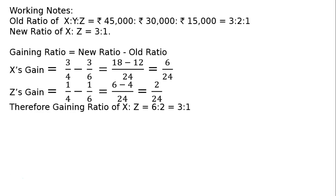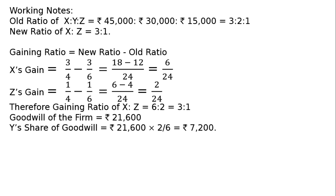Goodwill is shared in the gaining ratio. The goodwill of the entire firm is fixed at 21,600. Y's share of goodwill is 21,600 × 2/6, which equals 7,200.